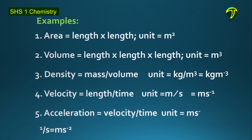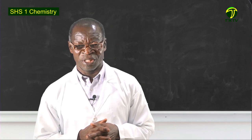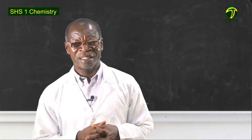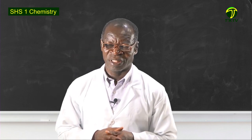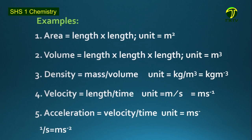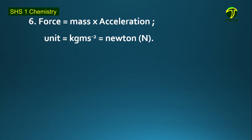Then we have acceleration, which is the rate of change of velocity, and it is velocity divided by time. Velocity is a derived quantity and time is a basic quantity, and we are combining them to obtain acceleration. We have velocity in meter per second divided by another second, so the unit for acceleration is meter per second squared. Then we have force, which is mass times acceleration. Mass is a basic quantity measured in kilogram, and acceleration is measured in meter per second squared. When we combine them, we have a new unit called Newton, capital N.